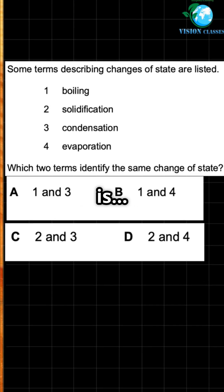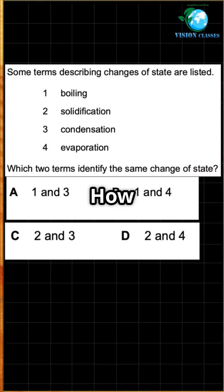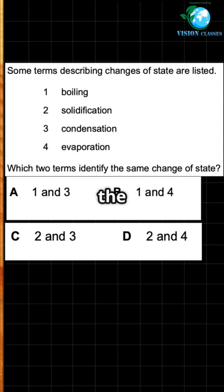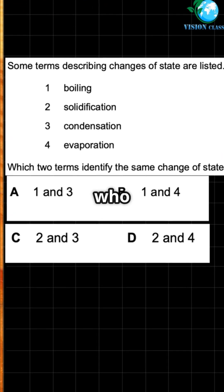So the answer is B. 1 and 4. How did you do? Drop your answer in the comments and tag a mate who needs this recap.